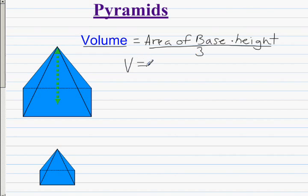So in short, the volume equals the area of the base, as we write capital B, times the height of the pyramid divided by 3. So let's look at this example.